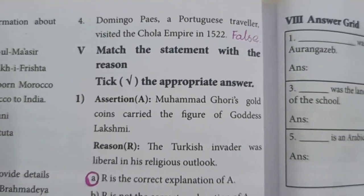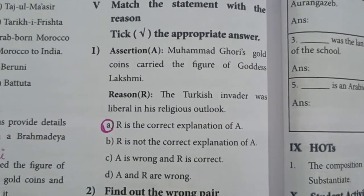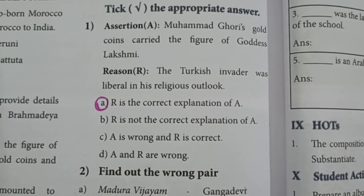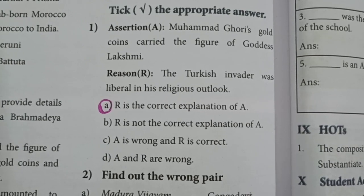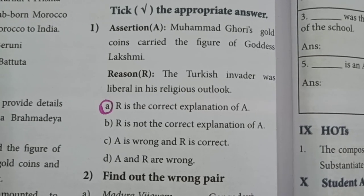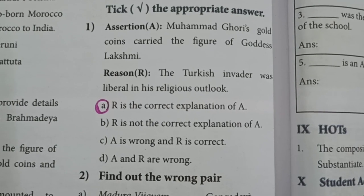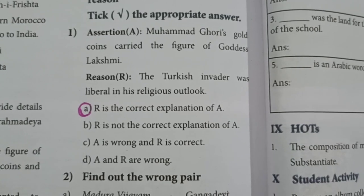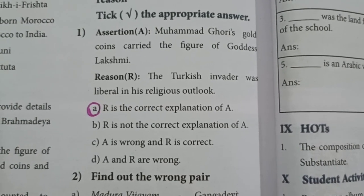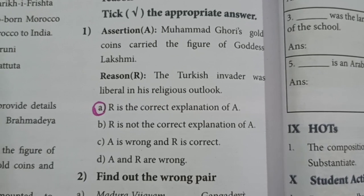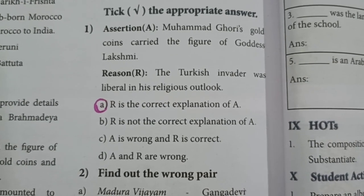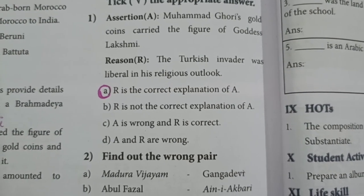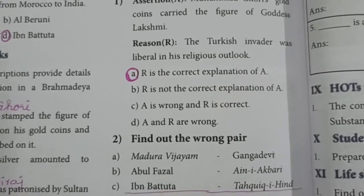Match the statement with the reason. Here we have assertion and reasoning. The assertion is: Mohamed Gori's gold coins carried the figure of Goddess Lakshmi. The reason is: the Turkish invader was liberal in his religious outlook. The answer is: R is the correct explanation for A.